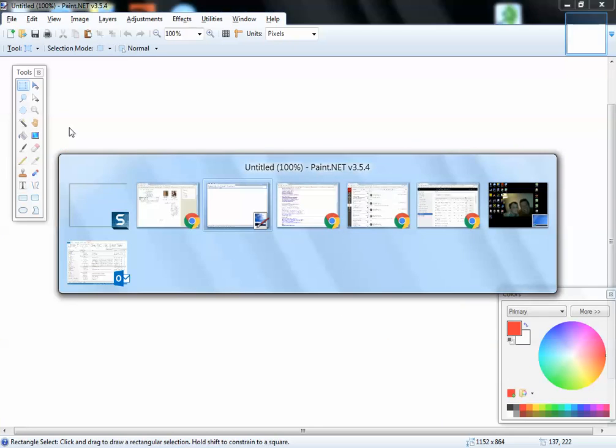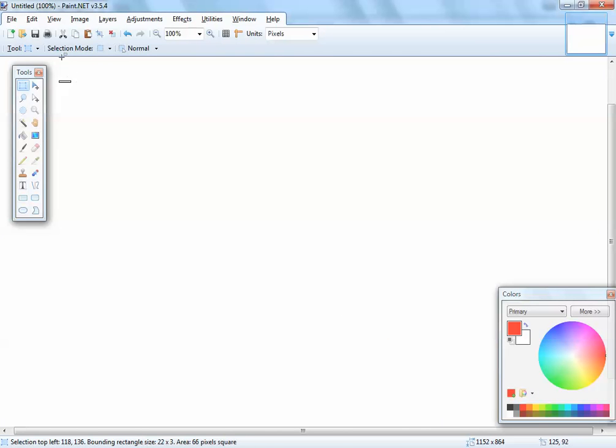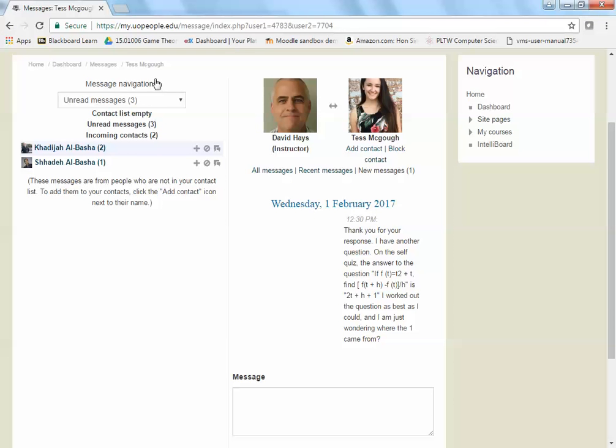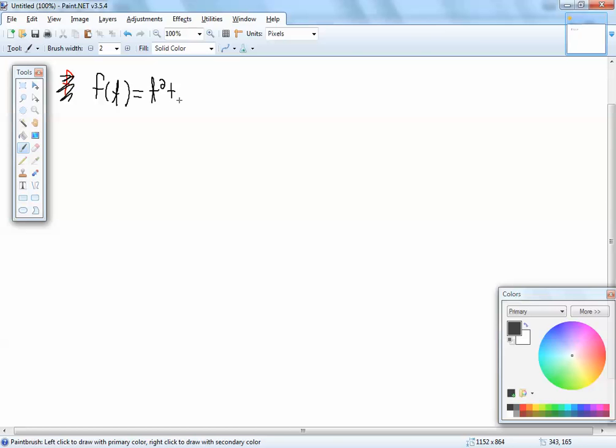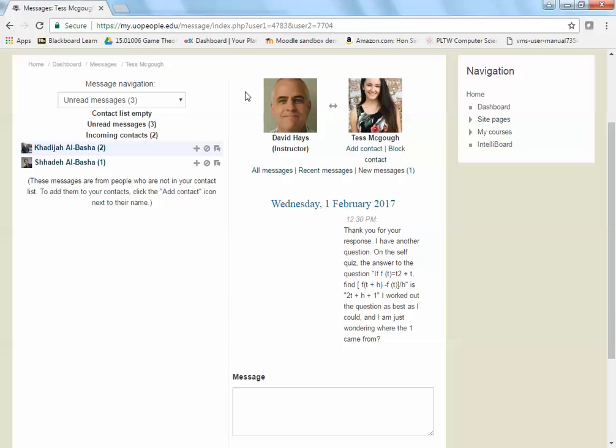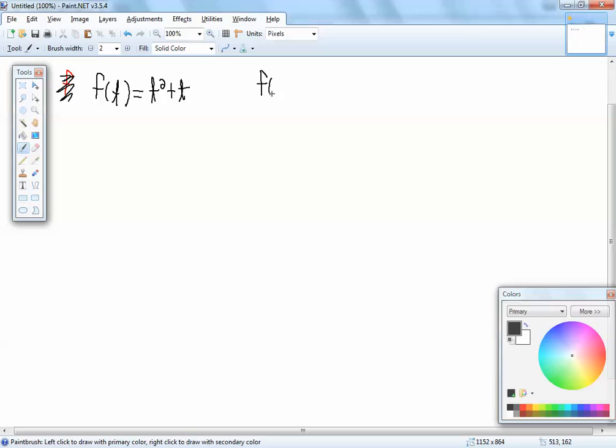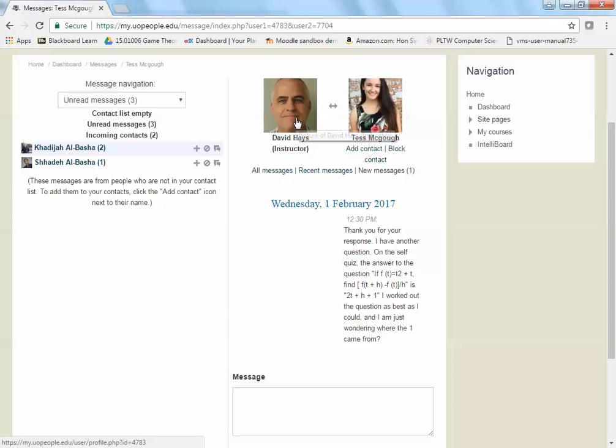F of T. Paintbrush. Okay. Yeah. We have F of T. I'll eventually get this. We have F of T is equal to T squared plus T. And it says to find the F of T plus H minus F of T all over H.